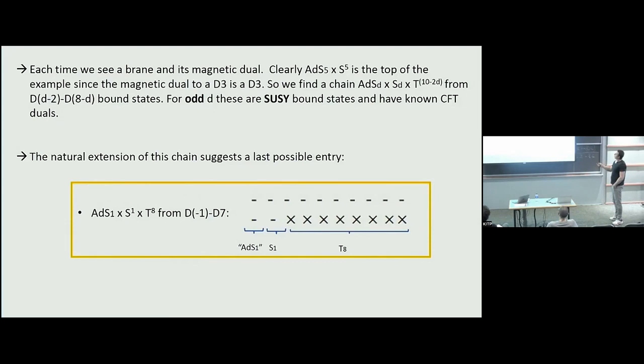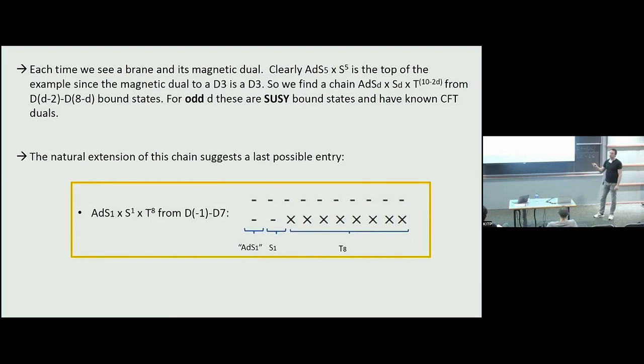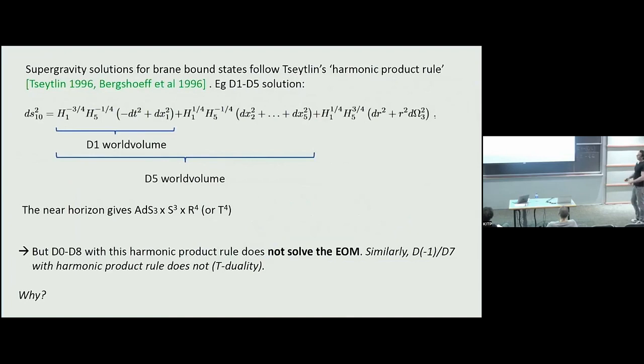It was very hard for me not to contemplate d=1 in this chain. What would it be? It would be what you get from intersecting a D(-1) instanton near a D7 brane — something like this. Now what is funny: you can try to google this and it is essentially not discussed. There is no supergravity paper and no supergravity solution that corresponds to this bound state. If you know one, please tell me.